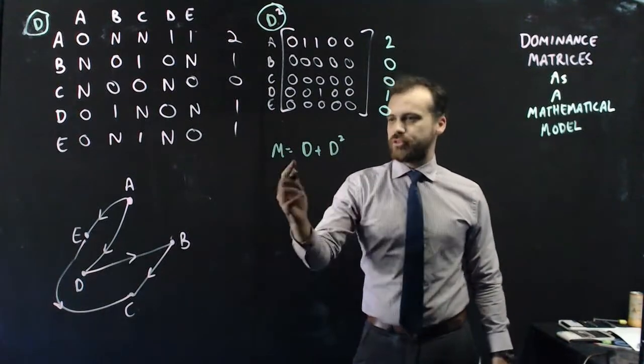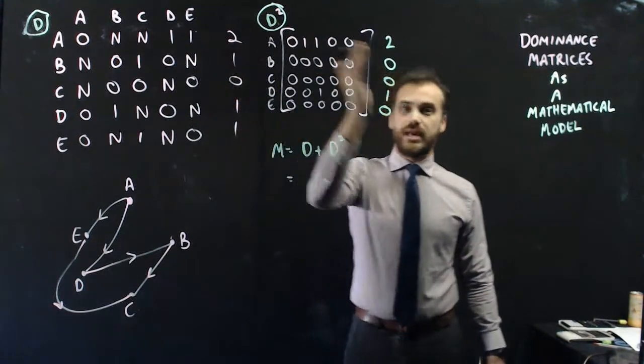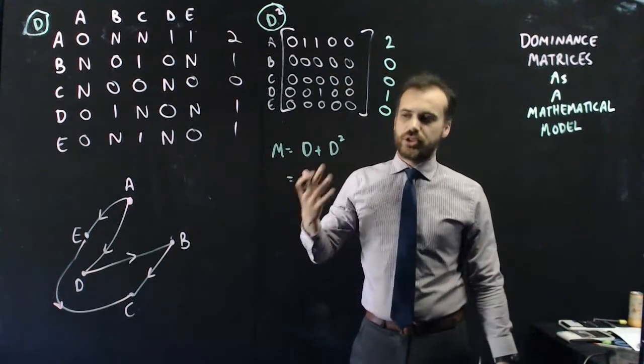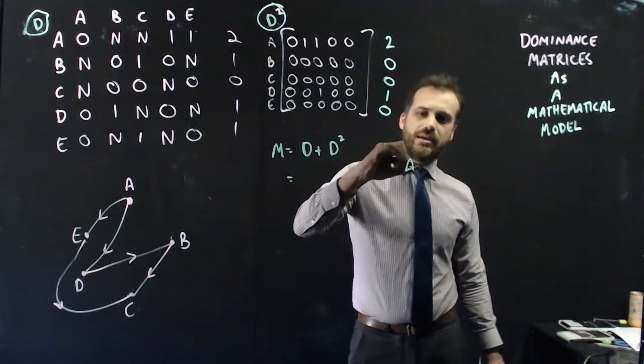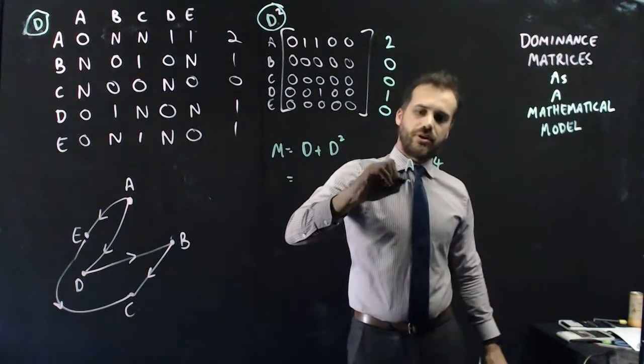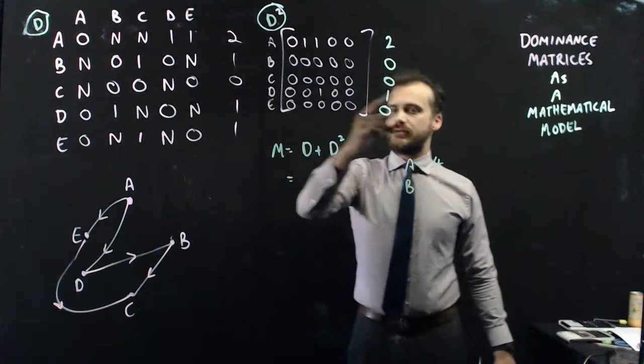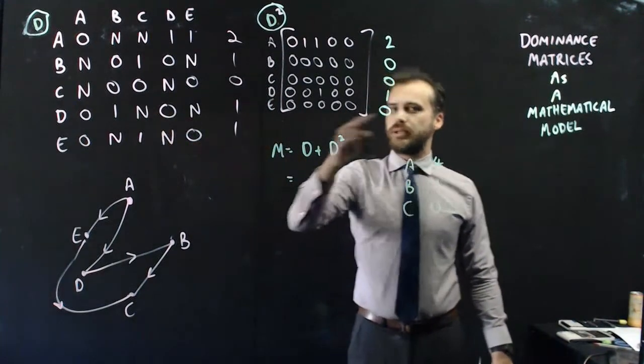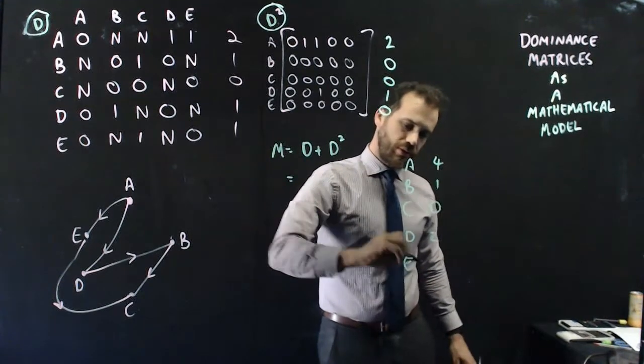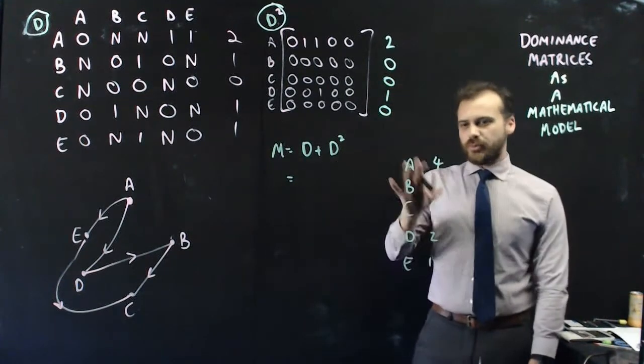Now if I were to use like a really simple dominance matrix idea, just change my letters a little bit, D, D squared. So if I take a dominance matrix idea where I just take this matrix and add this matrix, A will end up having two plus two points, which is four points. B will end up having one plus zero, which is one. C will have zero plus zero, which is zero. D will have one plus one, which is two. And E will have one plus zero, which is one.